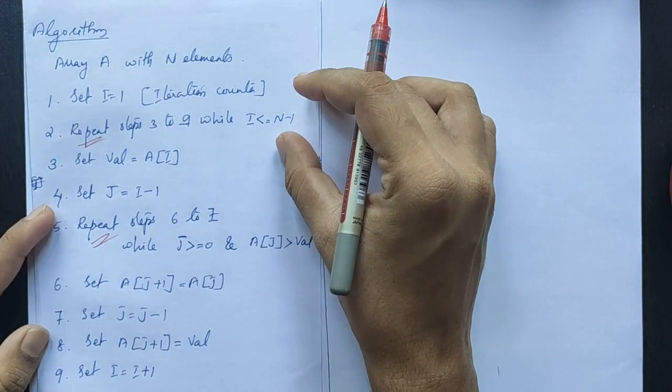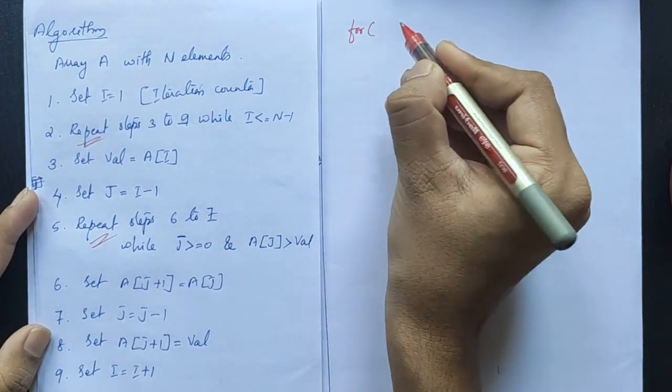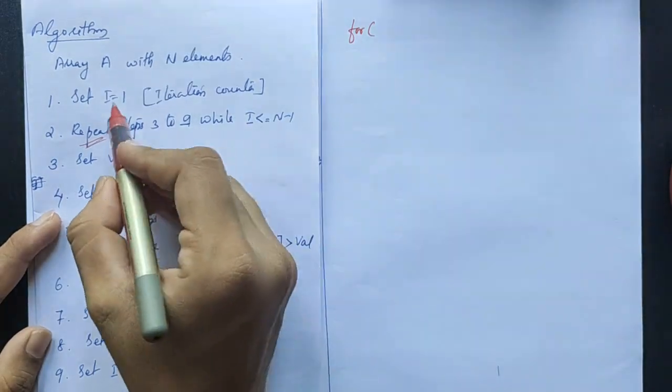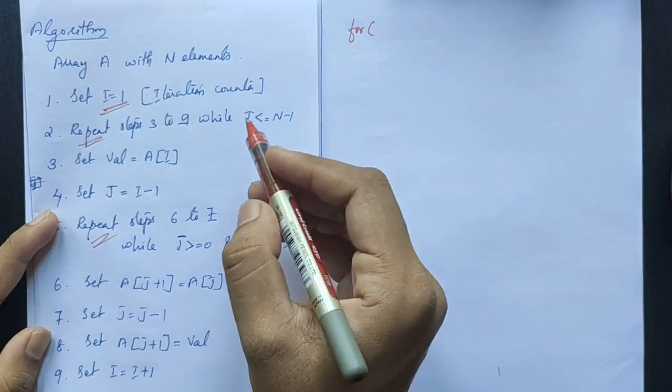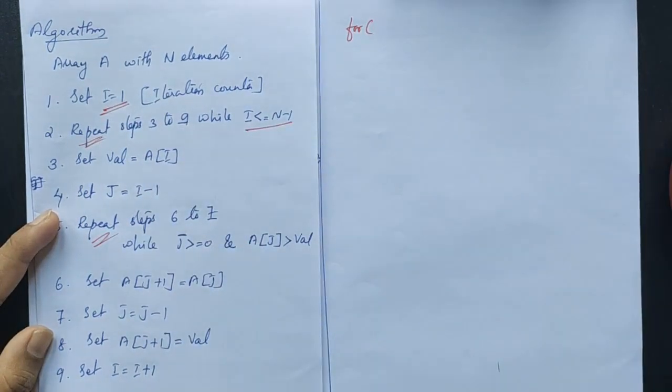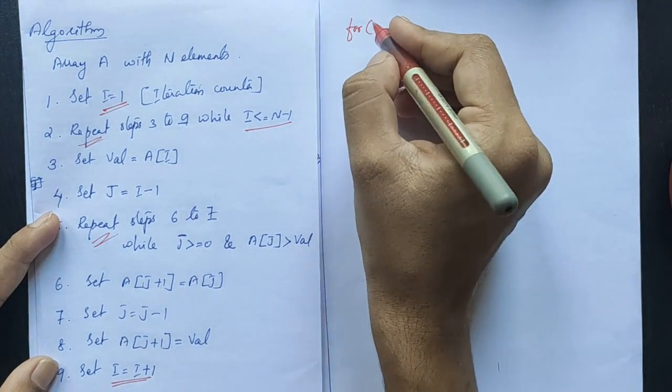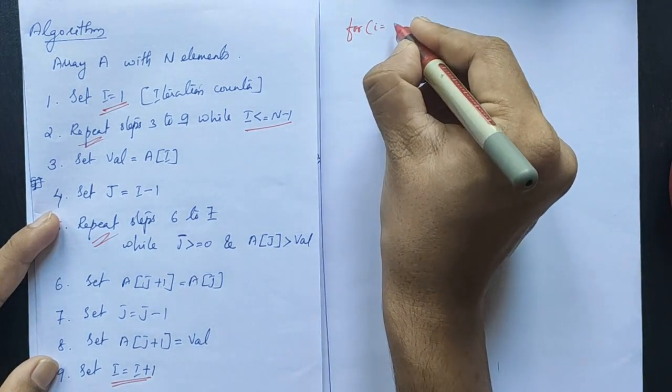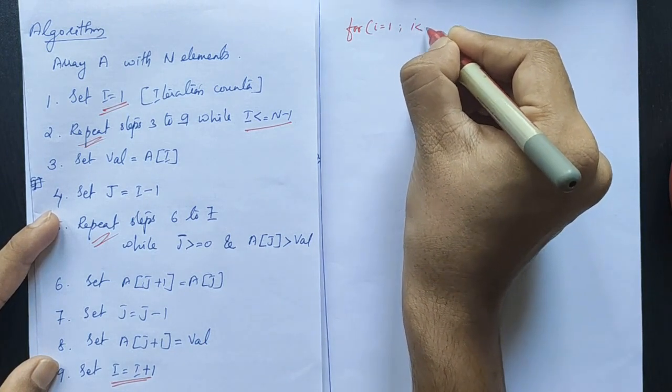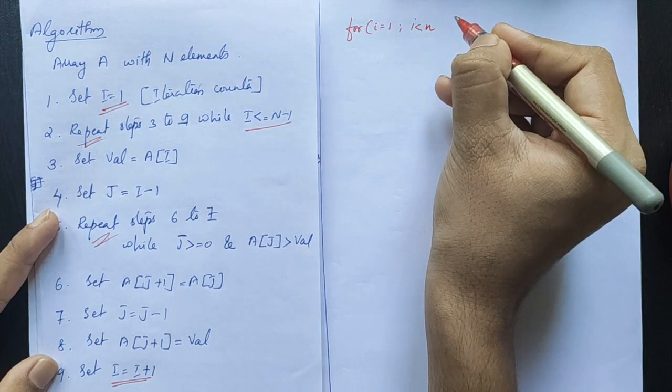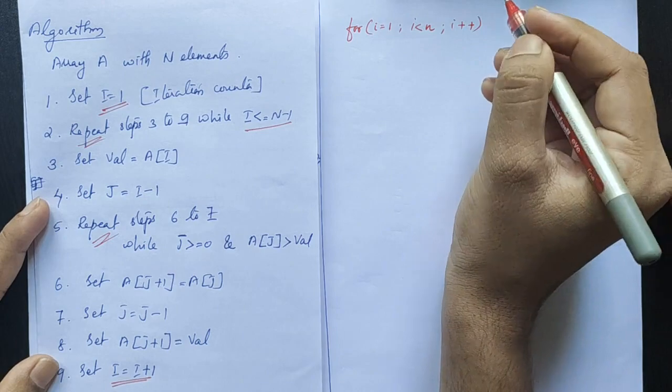For the outer loop: i equal to 1, condition i less than or equal to n minus 1, increment i equal to i plus 1.